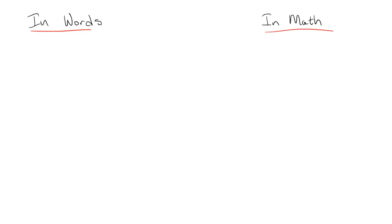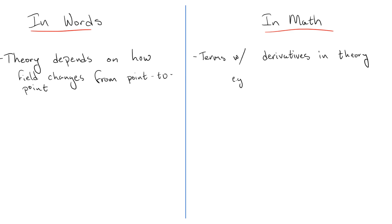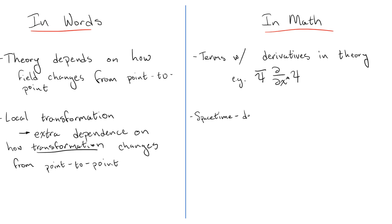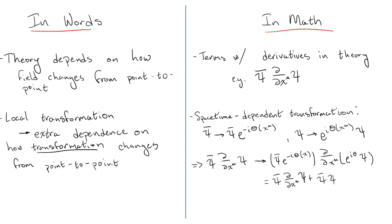Now, the issue is that our theory is dynamical, meaning that it doesn't just depend directly on the fields, but also how the fields change from point to point. When we had a global transformation, this didn't matter because the transformation was the same everywhere. But when we have a local transformation, the transformation itself still cancels out for the same reason it did in the global case. But what doesn't cancel out is the dependence on how the transformation changes from point to point. Terms corresponding to these changes don't end up cancelling in the theory, so we don't have a true symmetry.